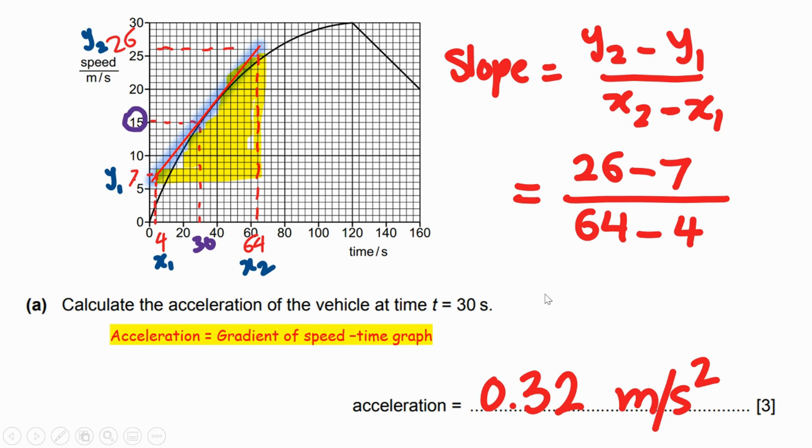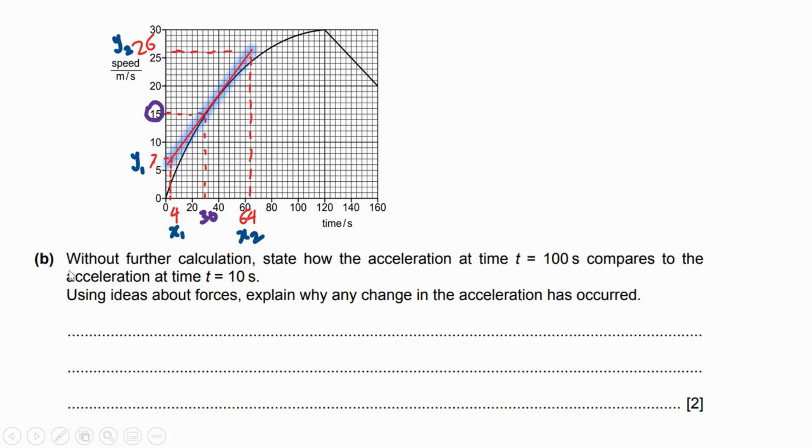Section (b): without further calculation, state how the acceleration at 100 seconds compares to the acceleration at 10 seconds. Using ideas about forces, explain why any change in the acceleration has occurred. At 10 seconds it was approximately a straight line, then becomes curved. At 100 seconds it means there is an increase in the value of speed but in a longer time, which indicates there is less acceleration.